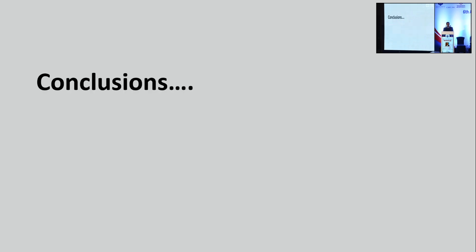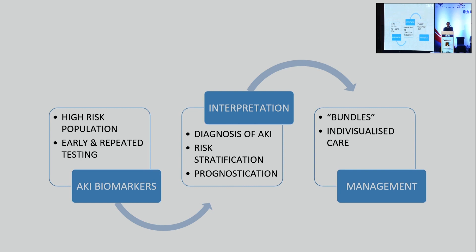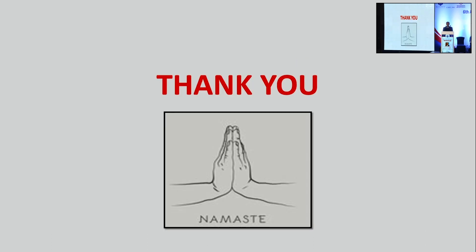In conclusion, there are three dimensions to this. We need to check AKI biomarkers not randomly for all patients, but identify at-risk patients for whom we offer AKI biomarkers, test them early, and test them repeatedly. This leads to interpreting results for diagnosis, risk stratification, and prognostication, which then translates into management. We can develop bundles — a protocolized approach for a particular unit and patient population — or have personalized care based on the biomarker. This remains a grey area where more data is needed. Thank you all for your attention.